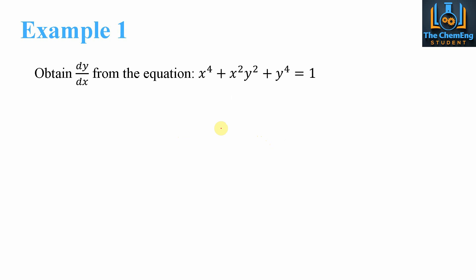Looking at this example, we are asked to obtain dy/dx from the equation x⁴ + x²y² + y⁴ = 1. We can see that isolating y in terms of x is almost near impossible, especially because the middle term causes a lot of issues. What we can do is apply a series of processes to each term individually and then combine them together.